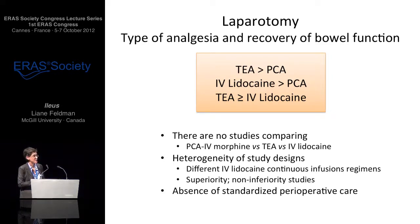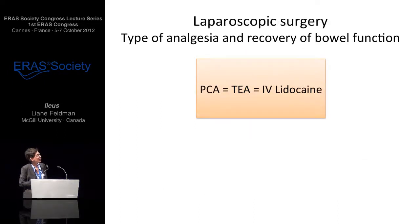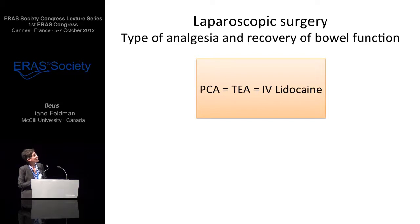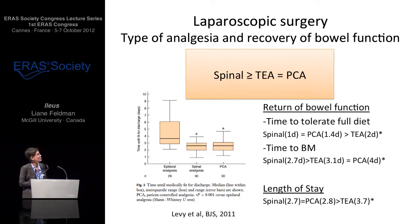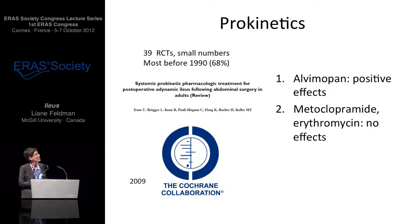For laparoscopic colon surgery, looking at return of bowel function, it doesn't seem to matter much which analgesic modality you use. A new player is intrathecal morphine — a single-dose spinal in the operating room — which in one study was superior to epidural for time to first bowel movement, and both were equivalent to intravenous opiates in some ileus outcomes. This is potentially very interesting for laparoscopic colon surgery.